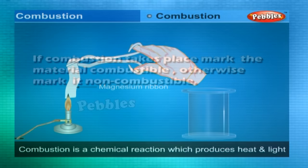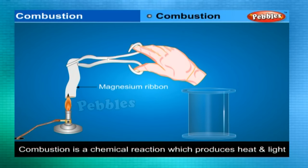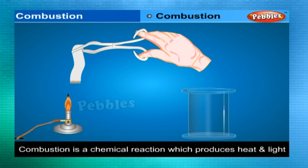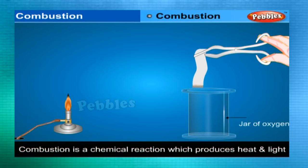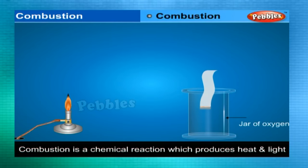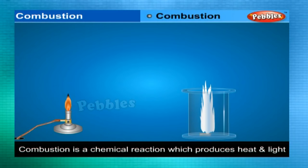Combustion is a chemical reaction in which heat and light are produced. Example: a heated magnesium ribbon, when introduced into a jar of oxygen, burns producing heat and dazzling white light.